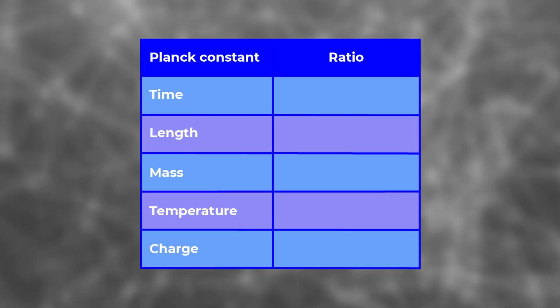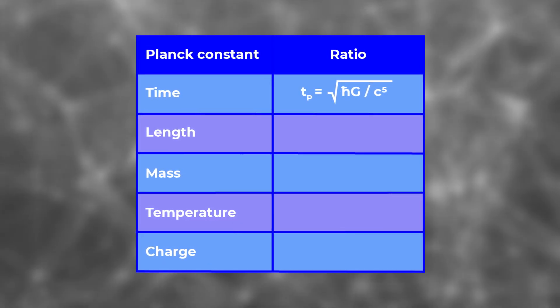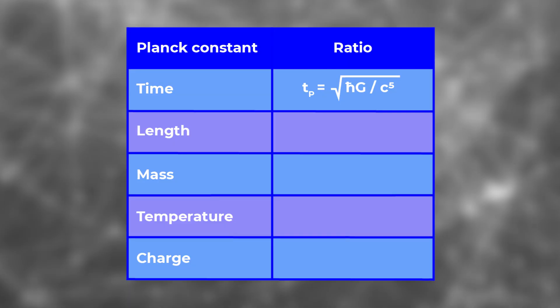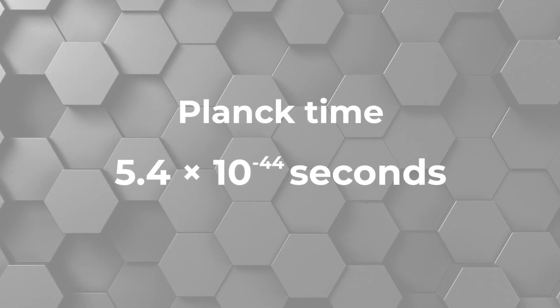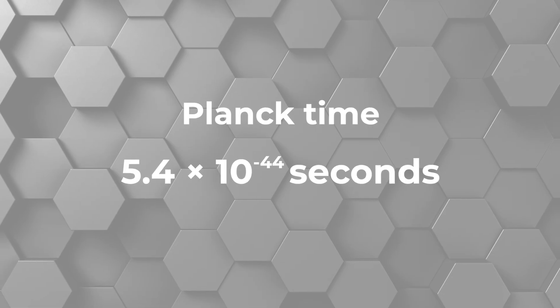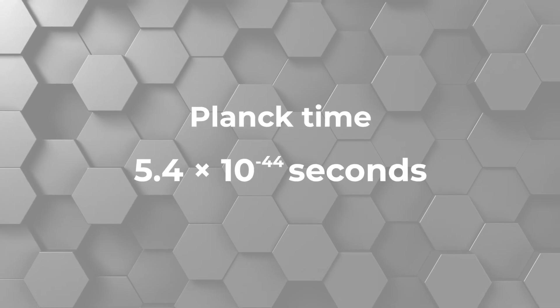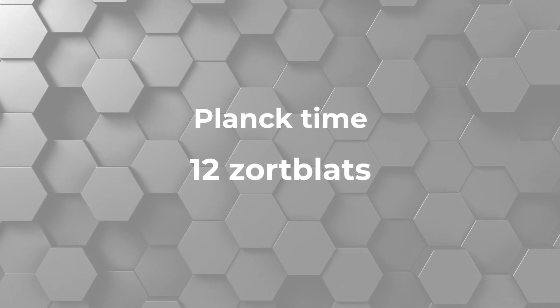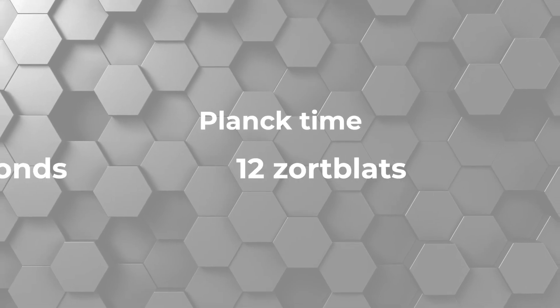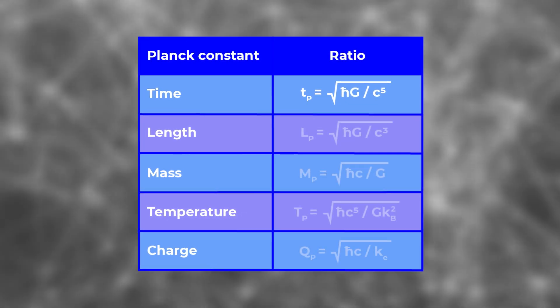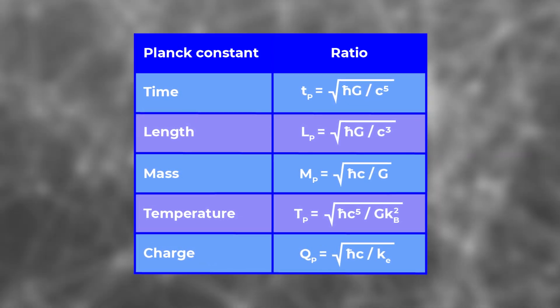Planck then took these scientifically measured quantities and made various ratios of them to get a desired unit. For instance, to get a unit of time, he took the reduced Planck constant times the gravitational constant divided by the speed of light to the fifth power, and then took the square root of all that. The result is the Planck time, which has a numerical value of 5.4 times 10 to the minus 44 seconds. Some other culture with different units could do the same thing and come up with 12 zortblatts — and since these are the same thing, we now have a way to convert zortblatts to seconds and back again. Planck went on and defined the Planck length, mass, temperature, charge, etc.